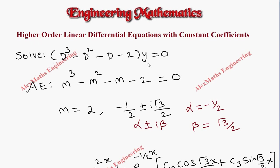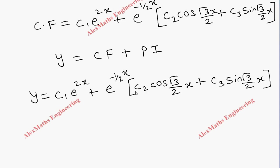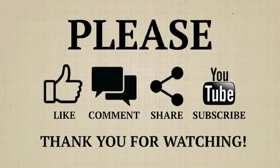The right side of the equation is 0, so there is no particular integral (PI). The complete solution is y = CF + PI, so y equals the complementary function alone. We have the complete solution. See you next time.